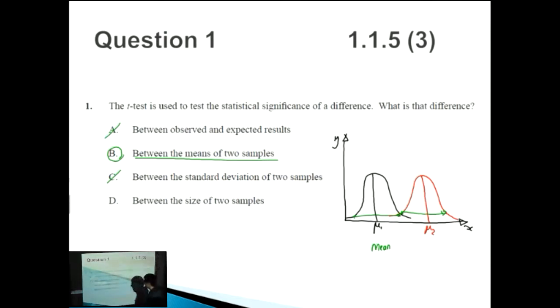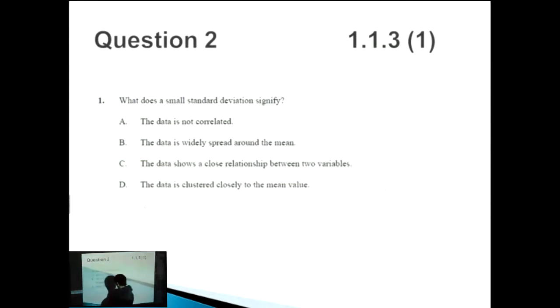Finally, let's consider D, between the size of the two samples. This is fairly obvious that it's the wrong answer because the size of two samples, the size of one sample would be a number. So it might be if you had 57 points in the first set of data be 57, and you can compare that with the second set of data that might have 59 points of data. So you don't use the t-test to compare these two samples. So it's not D, therefore it's B. That's the first point.